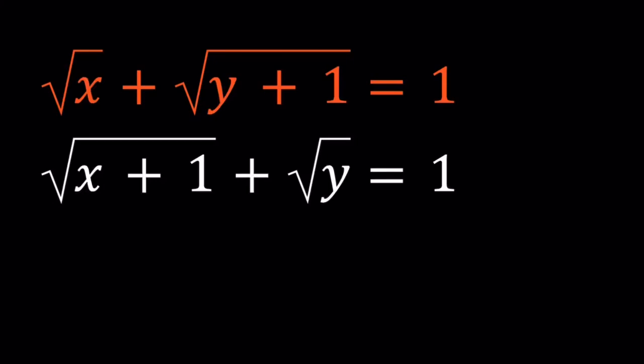Hello everyone. In this video we're going to be solving a radical system. We have the square root of x plus the square root of y plus 1 equals 1, and the square root of x plus 1 plus the square root of y equals 1. So they're both equal to 1, which is nice. I'll be presenting two methods.